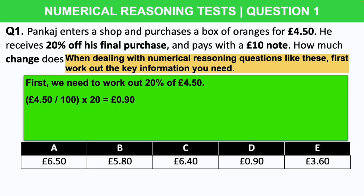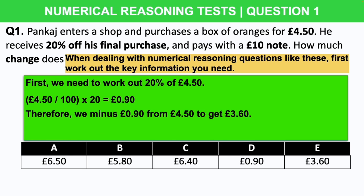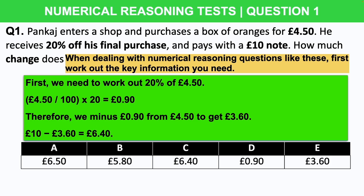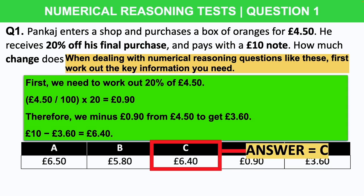The reason we divide by 100 is because 100 is our total percentage number — it's always out of 100%. That is always the formula you'll use to help work out percentages. The next step is quite simple: we minus that 90p from the £4.50 to get £3.60. Then if we take our £10 and minus the £3.60 from it, it gives us a total of £6.40. So the correct answer is C, £6.40.